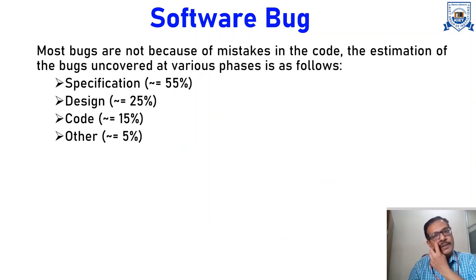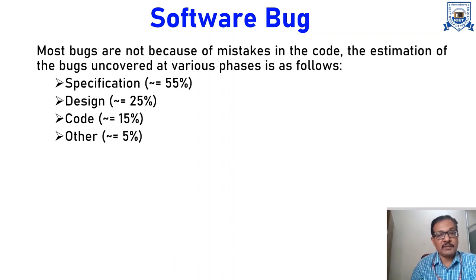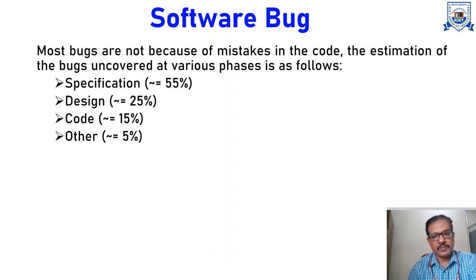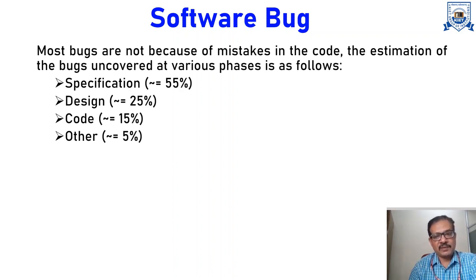Most bugs are not because of mistakes in the code alone. The estimation of bugs uncovered at various phases: at the specification itself 55% bugs can be uncovered, at design 25%, coding 15%, and others 5%. So it is a misconception that bugs only occur during the coding phase. Around 80% of bugs can be uncovered during SRS preparation and the design of the system.